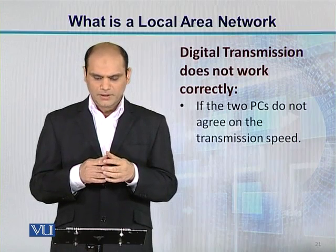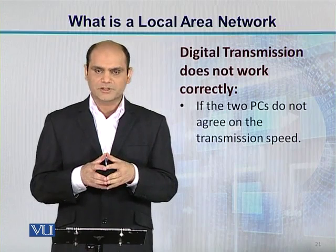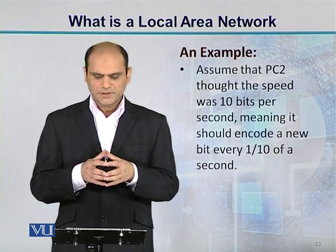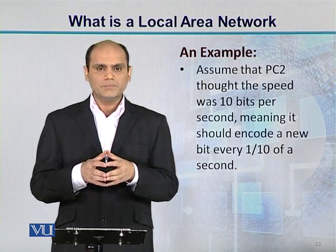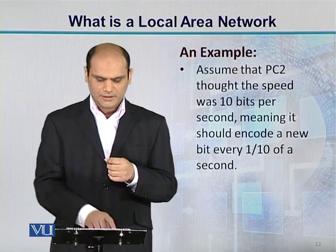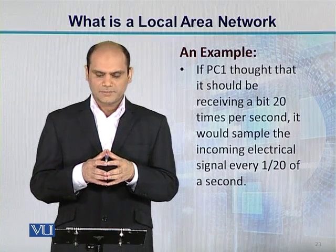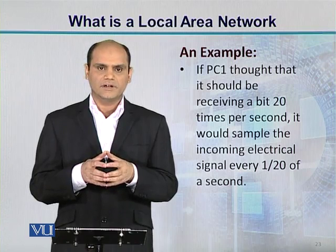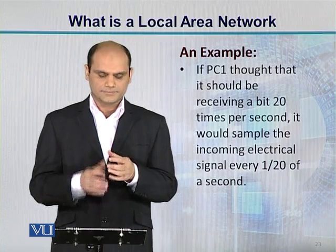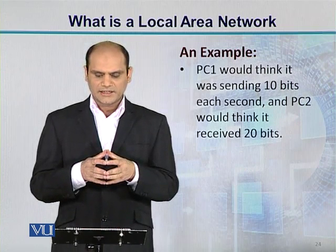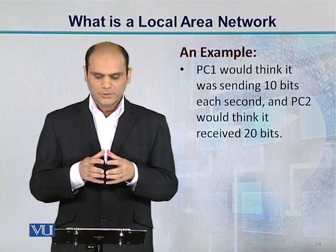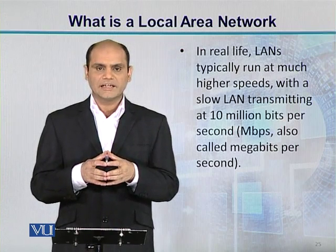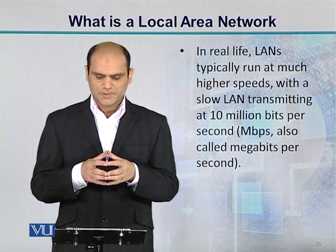If the two PCs do not agree on the transmission speed, digital transmission does not work correctly. For example, if PC2 encoded at 10 bits per second but PC1 sampled at 20 times per second, there would be a mismatch. In real life, LANs typically run at much higher speeds — a slow LAN transmits at 10 million bits per second, also called megabits per second.